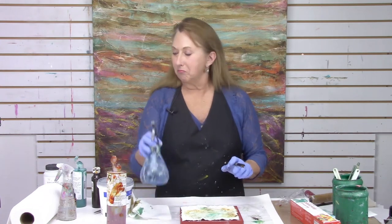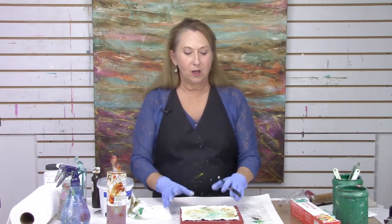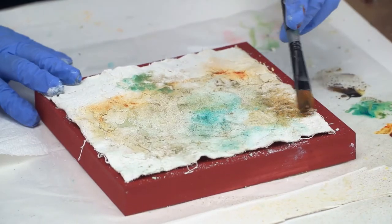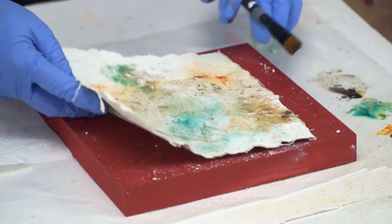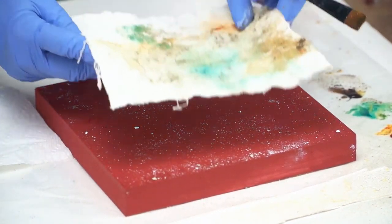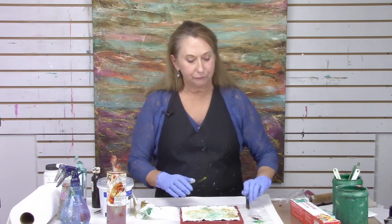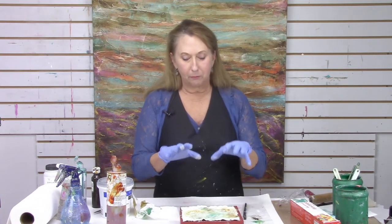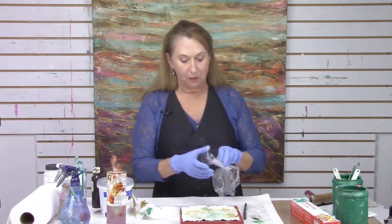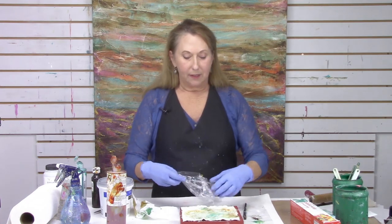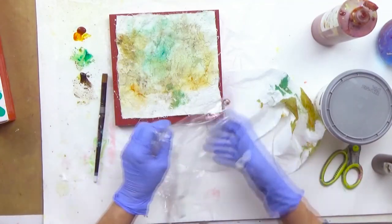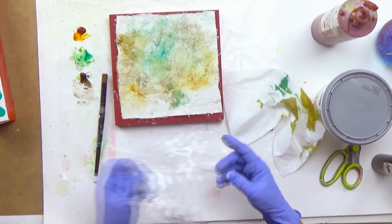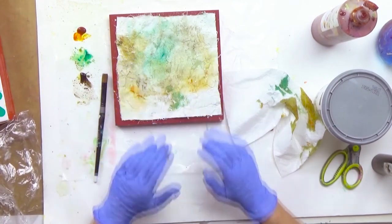And I would use probably a soft gel or a regular gel. Matte or gloss. It doesn't matter. Just put a good amount on the surface. Put this down. And put some plastic wrap on top. And then take your brayer. And to really adhere it. Adhere it down.